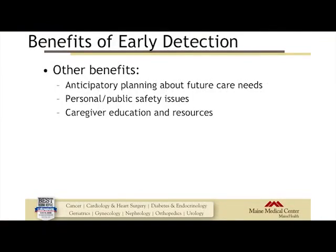Additionally, there's avoidance of certain medical regimens that may worsen cognition. If people have a vulnerability due to their neurodegenerative process, they may have increased vulnerability to medications affecting the CNS, such as benzodiazepines or other hypnotics and sedatives that can cause increased confusion. Perhaps most impactful is that early detection leads to anticipatory planning about future care needs, personal and public safety issues around driving, and caregiver education and resources.